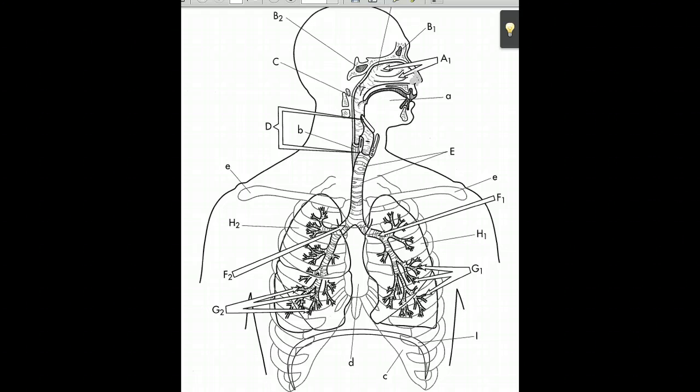At the back of your mouth and nose, in this area here, we call this the pharynx. The pharynx is the area where the nose and mouth come together, and it is the beginning of the tube that leads down into the lungs.